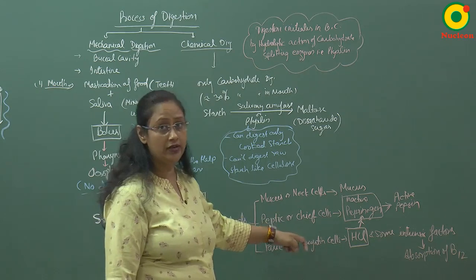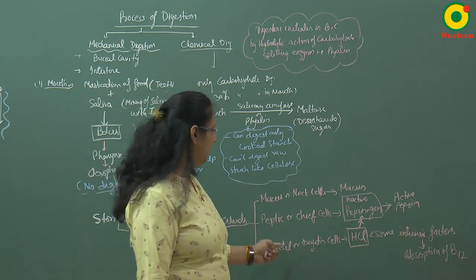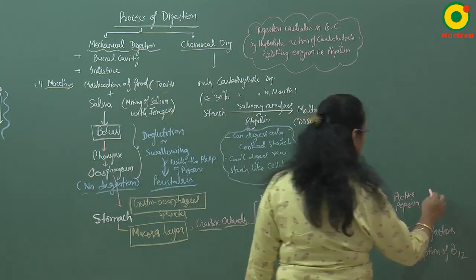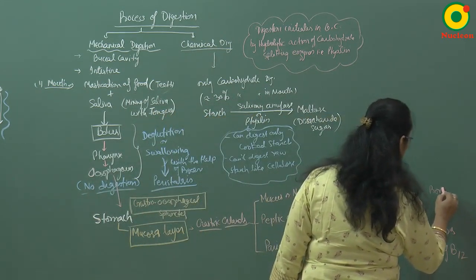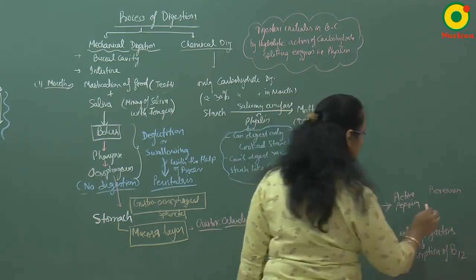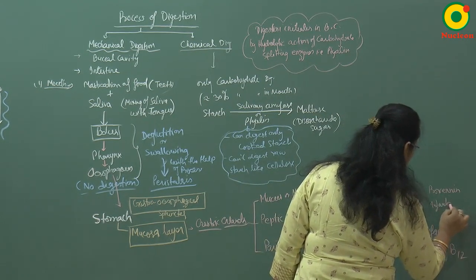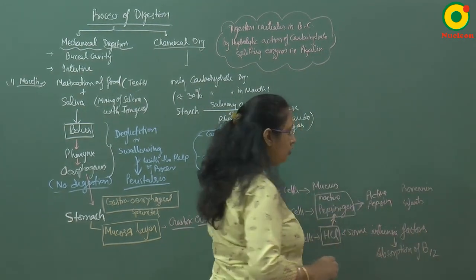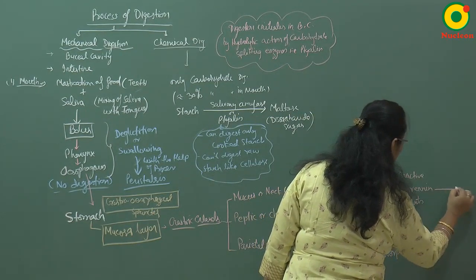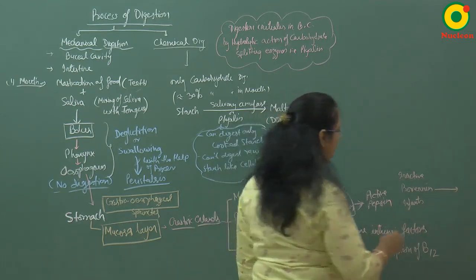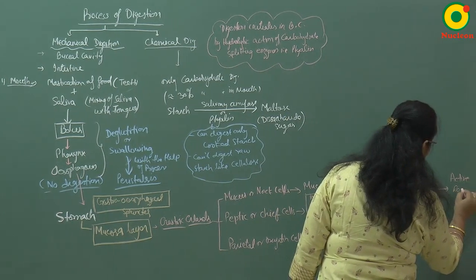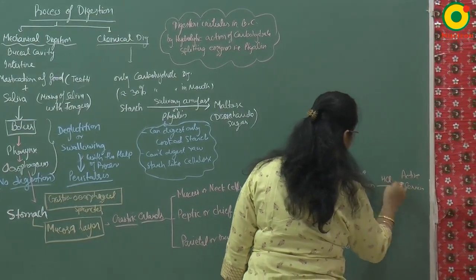In infants, there is another enzyme produced — that is prorenin. Prorenin is also in inactive form and is present in infants. This prorenin is converted into the active renin form with the help of HCl.